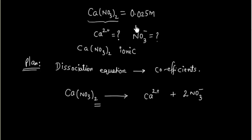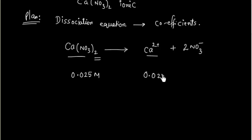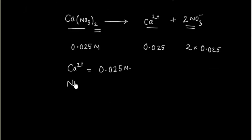If the concentration of calcium nitrate is 0.025 M, then 1 mole of calcium nitrate gives 1 mole of Ca²⁺, so [Ca²⁺] = 0.025 M. But 1 mole of calcium nitrate gives 2 moles of nitrate ion, so [NO₃⁻] = 2 × 0.025 M = 0.050 M.